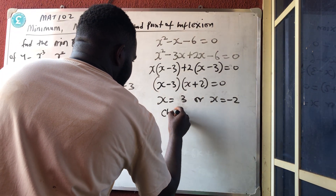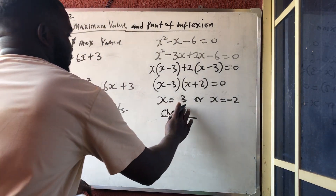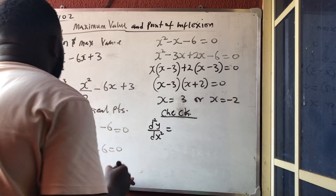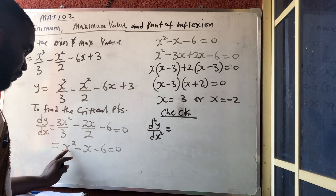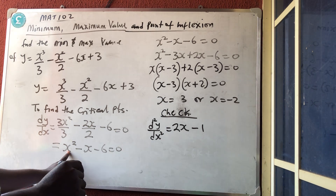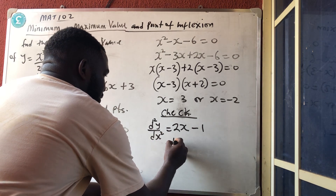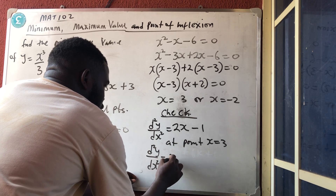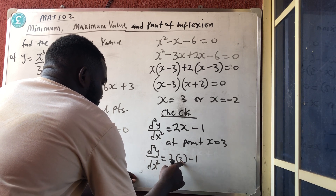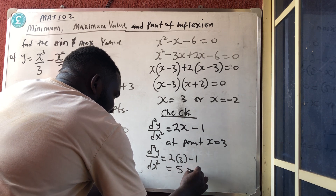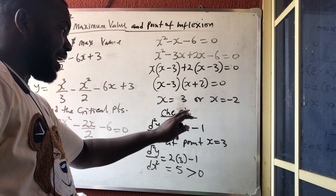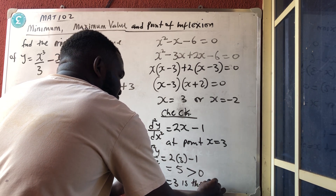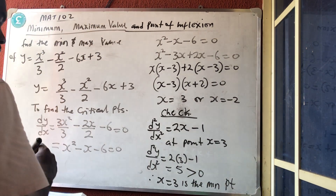But I don't know which one is the maximum point or the minimum point. So let us check by differentiating again. d²y/dx² is the second derivative of what we got. If we differentiate x² minus x minus 6, we get 2x minus 1. At x equal to 3: d²y/dx² equals 2(3) minus 1, which is 6 minus 1, which is 5. Since 5 is greater than 0, x equals 3 is the minimum point.